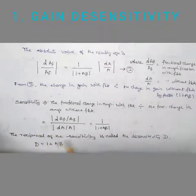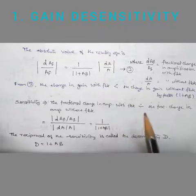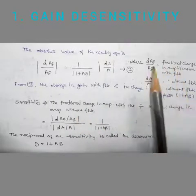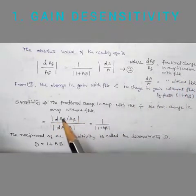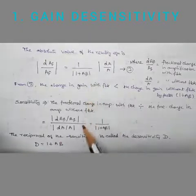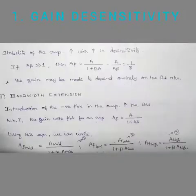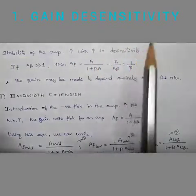Sensitivity is defined as the fractional change in amplifier gain with feedback divided by the fractional change in amplifier gain without feedback — that is, |dAF/AF| divided by |dA/A|, which equals 1/(1 plus A·beta). The reciprocal of sensitivity is called desensitivity, which equals (1 plus A·beta). The stability of the amplifier increases with increase in desensitivity.